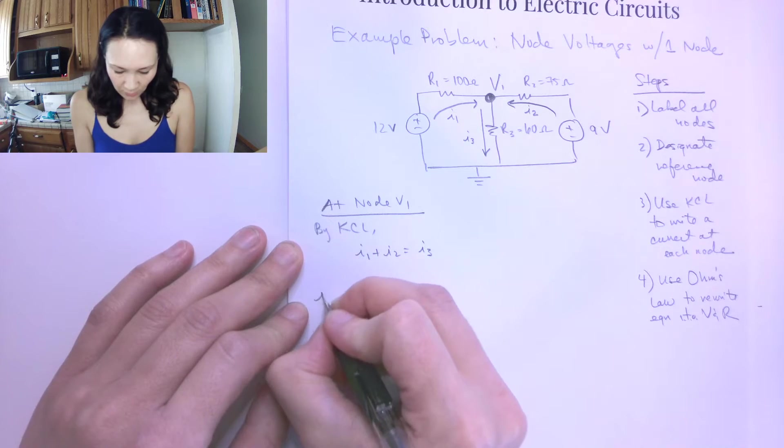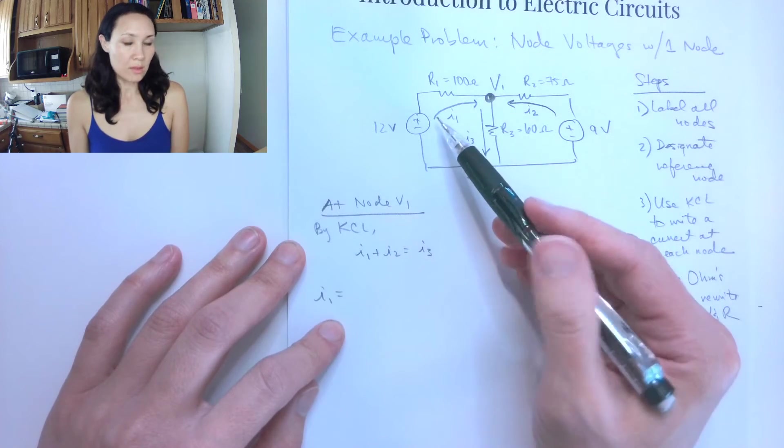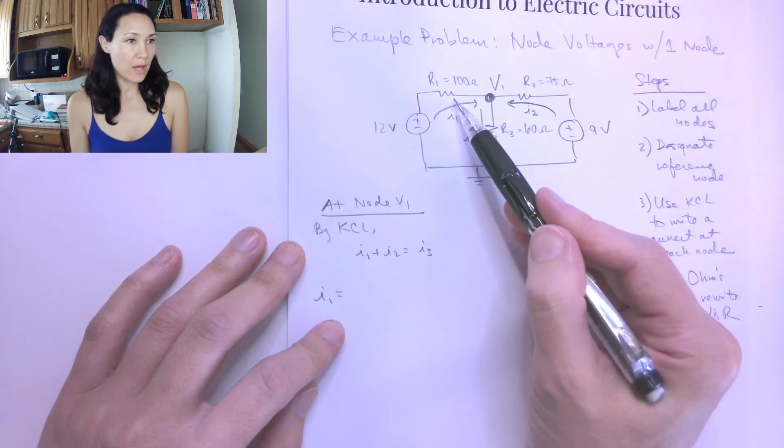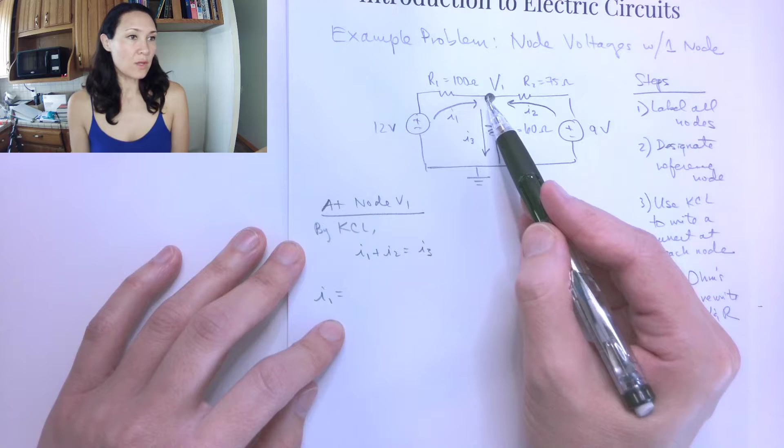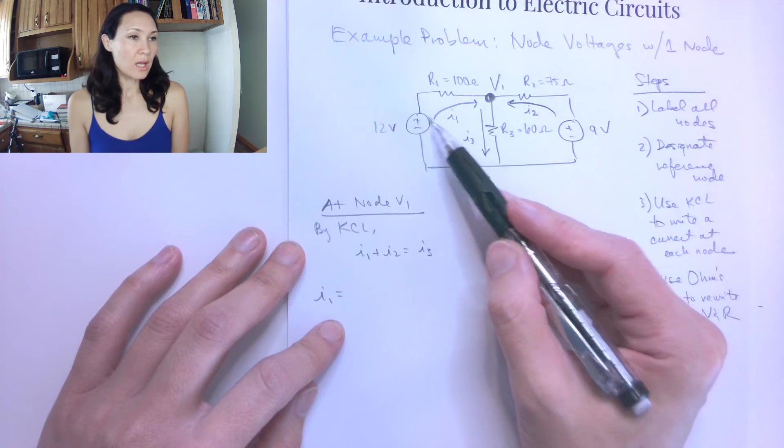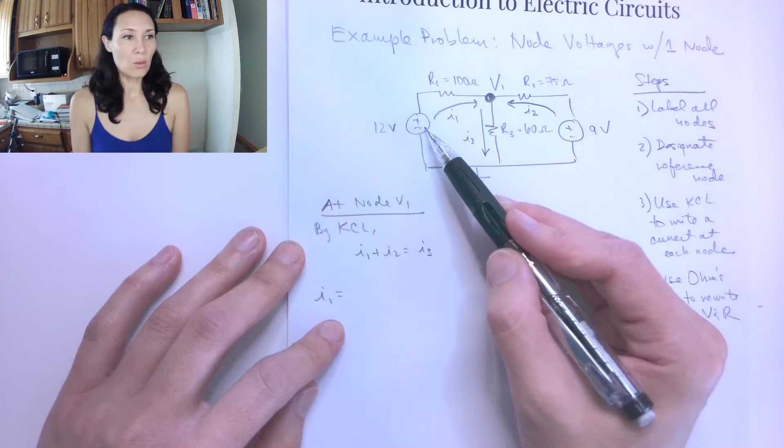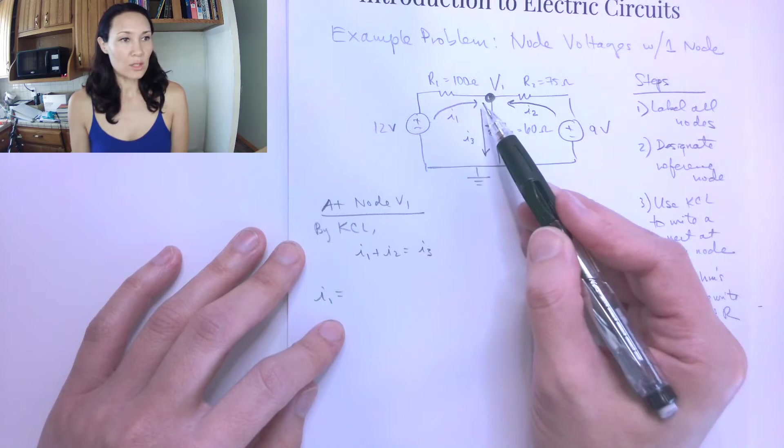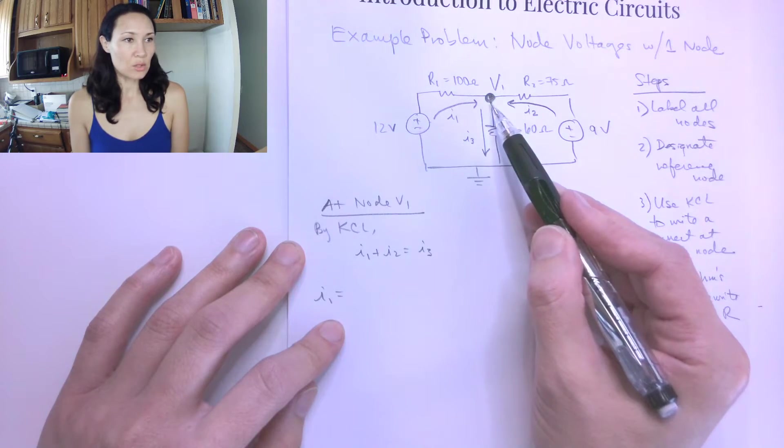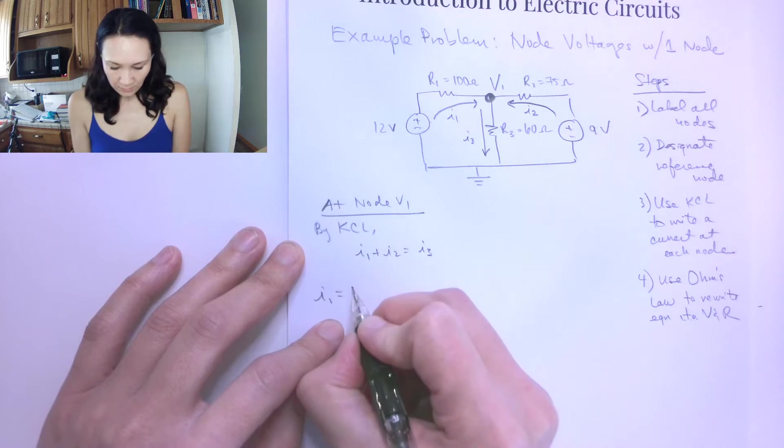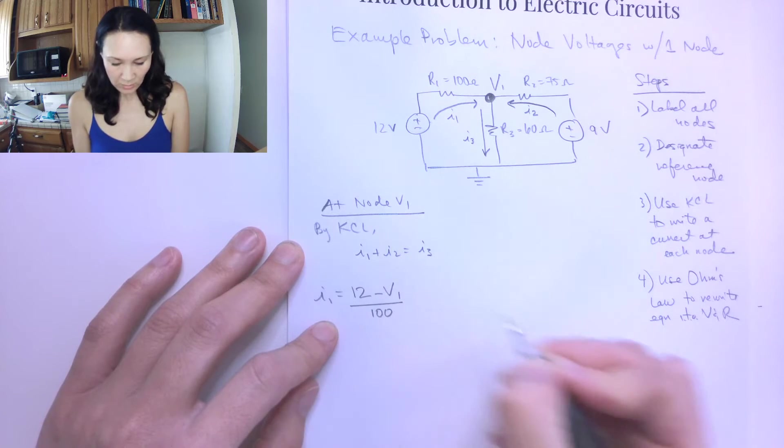So here's how the substitution is going to work. I can replace I1 with the difference of the nodes divided by the resistor between. So that's going to be 12 minus V1 divided by 100. And the reason why I start with a 12 and subtract V1 instead of starting with a V1 and subtracting 12 is because I'm following the direction of the current. So this is going to be my higher potential to a lower potential in this direction.